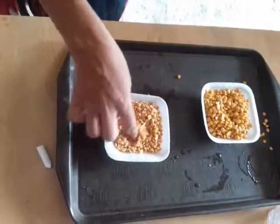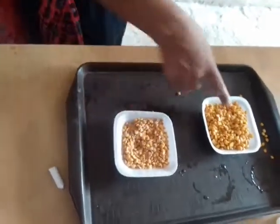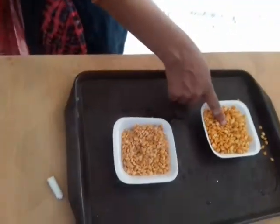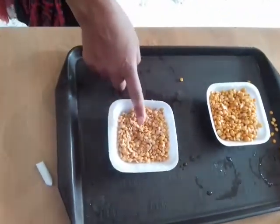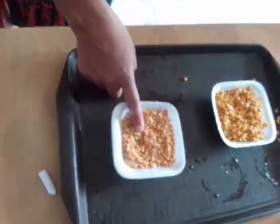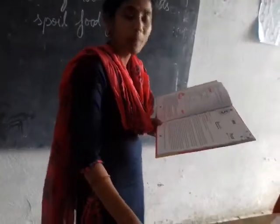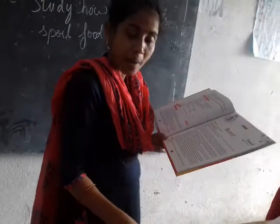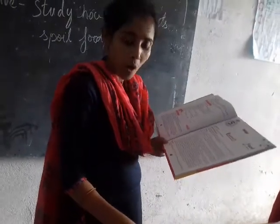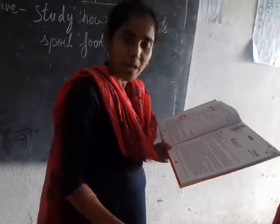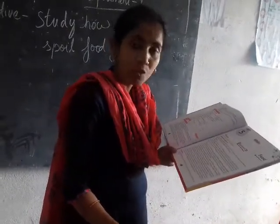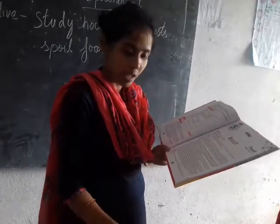These two samples are different from each other. This is good quality grain and this one is bad quality grain. The good quality grain has been preserved carefully, while this bad quality grain has been eaten up by organisms like insects or pests because it was left unpreserved.